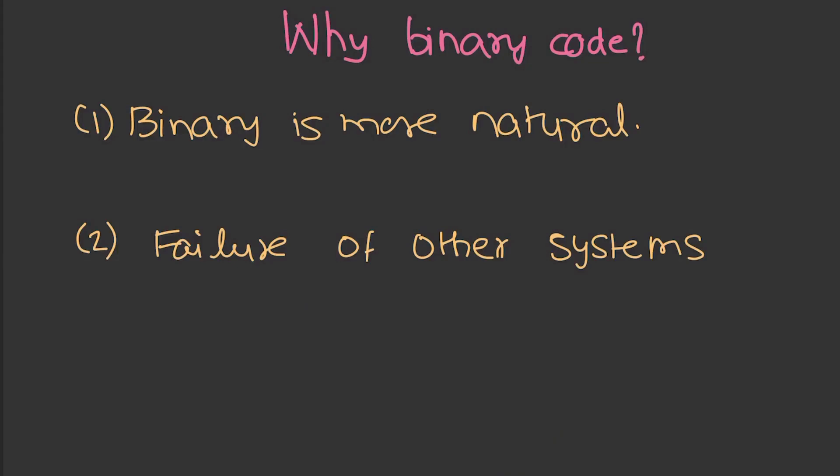We can use binary code because of two main reasons. First thing being it is more natural. Everything in nature can be closely associated with two things on or off which can be easily represented with the help of 1 and 0 respectively in the binary system. And the second one being the failure of other systems.